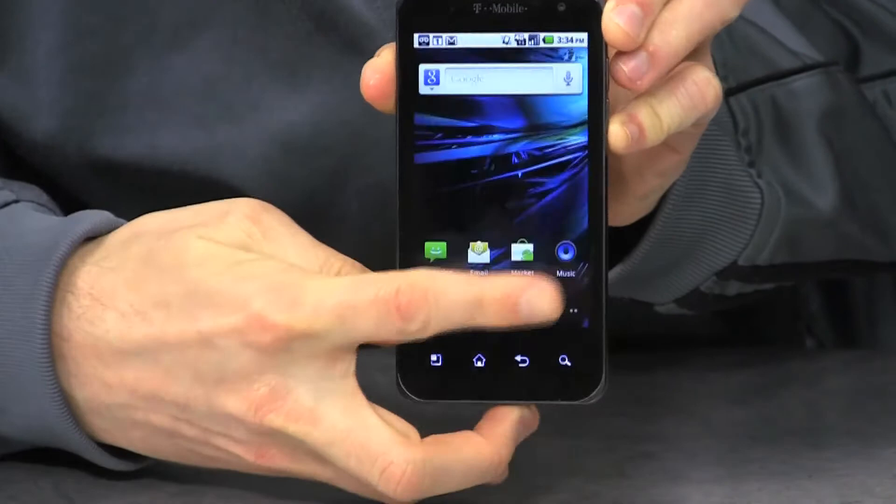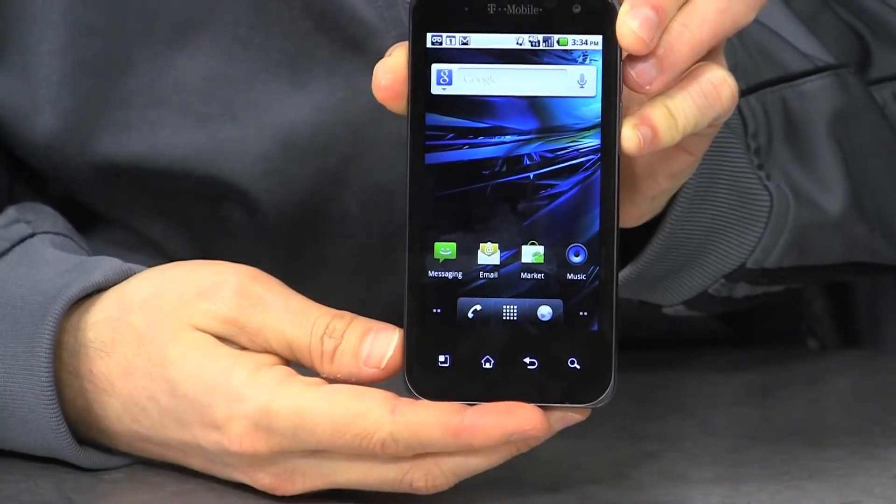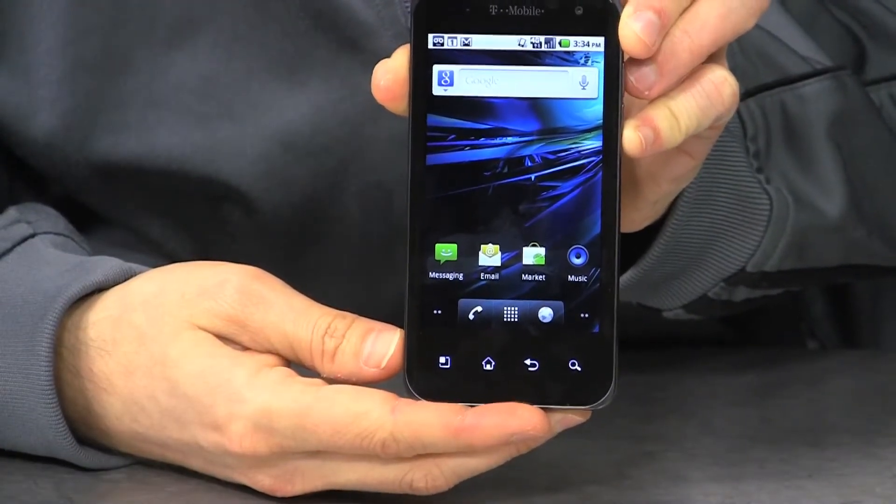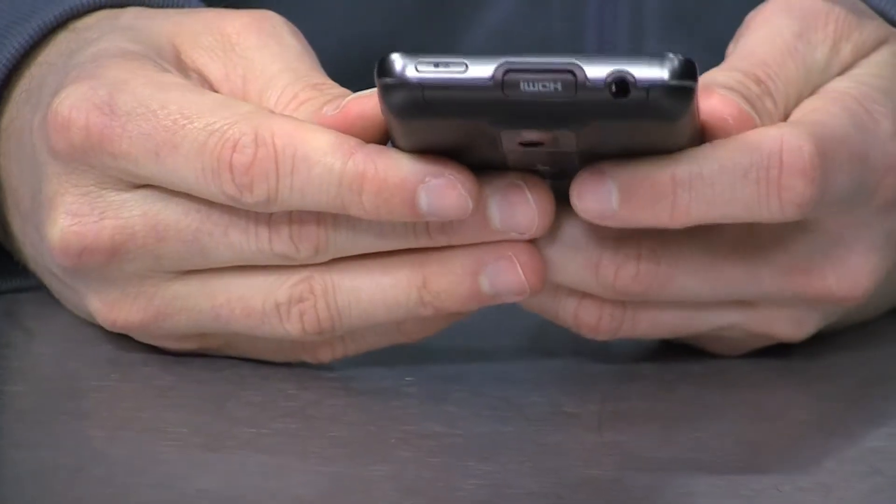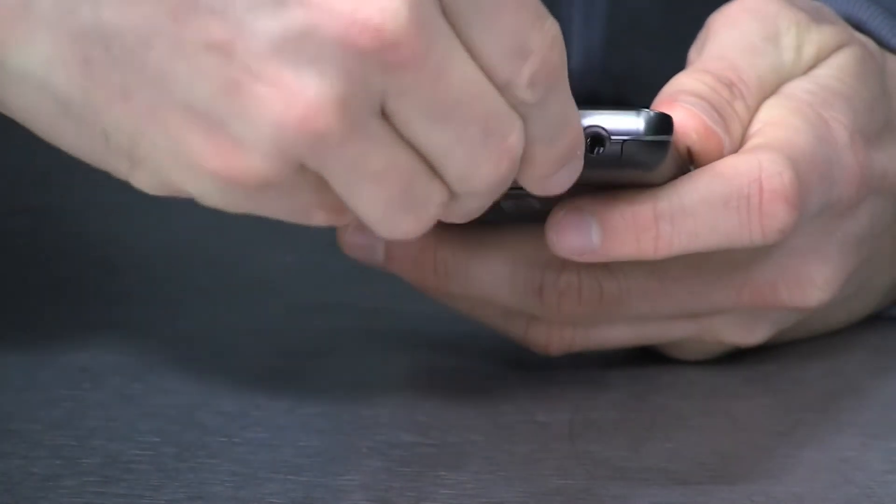It has a 4-inch diagonal screen, it's a very good-looking display, which, along with the processor, makes it a good gaming phone and a good video-watching phone. You can output your HD videos to a TV through the HDMI output up top.